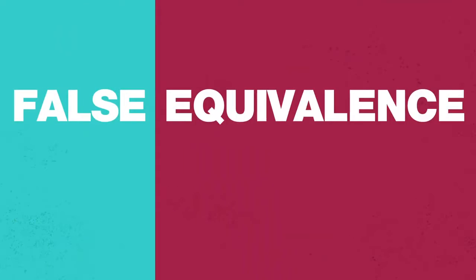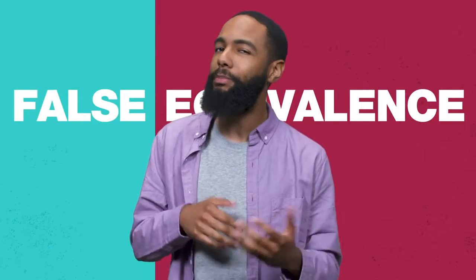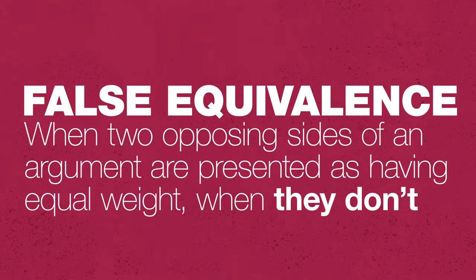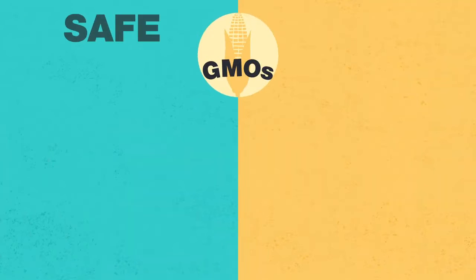But not every topic warrants a both-sides approach. Some viewpoints are simply not backed by empirical evidence or are based on false information, and journalists have to be really careful not to present them as legitimate debates. If they do, they are creating a false equivalence. So how can you spot false equivalence in journalism? First of all, what is false equivalence? It's when you set up two opposing sides of an argument and make it look like they hold equal weight when really they don't.